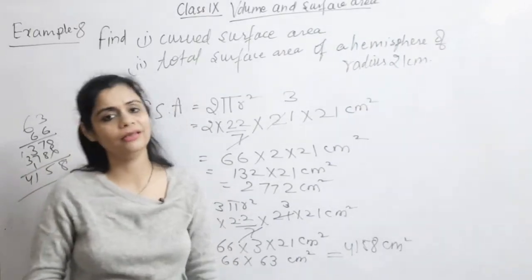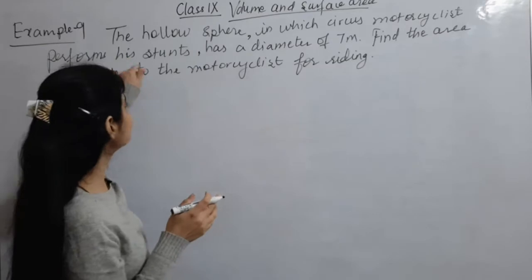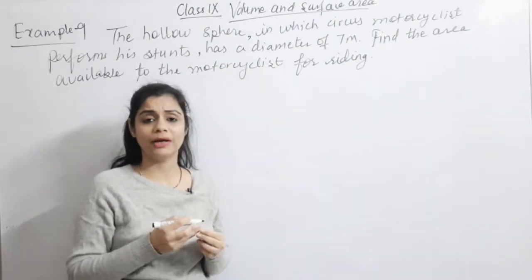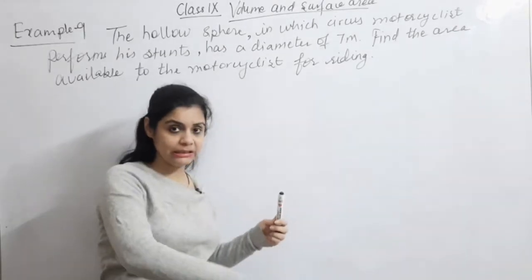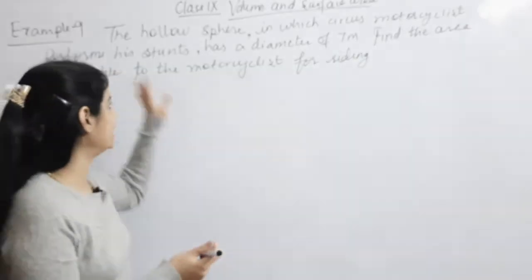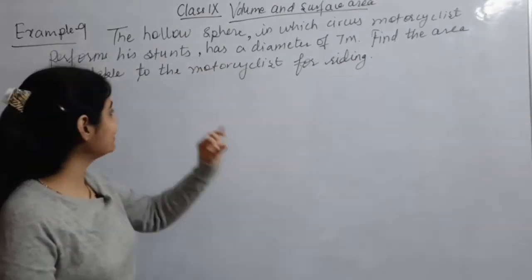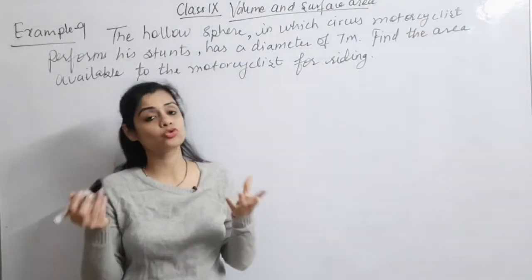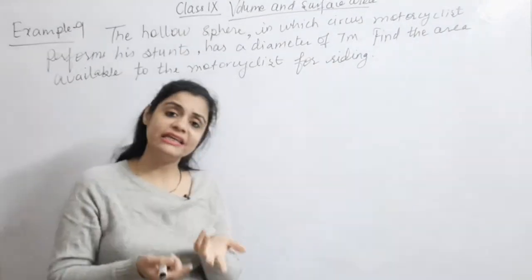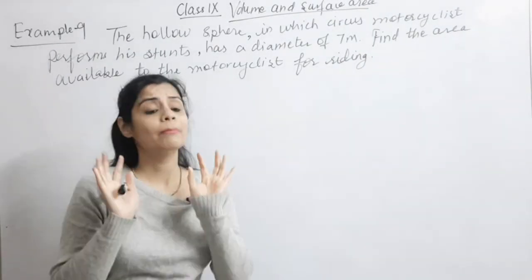Next is Example 9: A hollow sphere in which a circus motorcyclist performs stunts has a diameter of 7 meters. The motorcyclist rides inside the hollow sphere. We need to find the area available to the motorcyclist for riding, which is the surface area of the sphere — 4 π r². This is a full sphere, not a hemisphere.